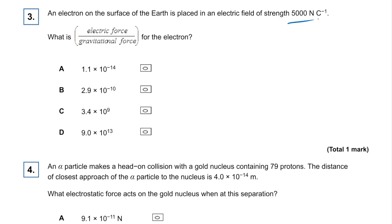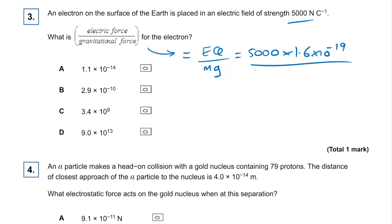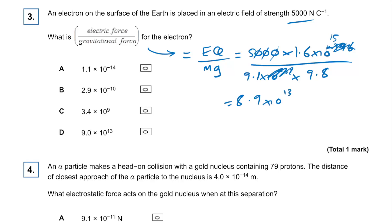Question three: we have an electron with a given electric field strength. What is the ratio of electric force to gravitational force? Electric force equals EQ; gravitational force is just MG. So we calculate 5,000 times 1.6×10⁻¹⁹ divided by 9.11×10⁻³¹ times G. Working through the powers of 10: 5 times 1.6 times 10¹⁵ divided by 9.1 times 9.8 gives approximately 8.9×10¹³. The answer is D.